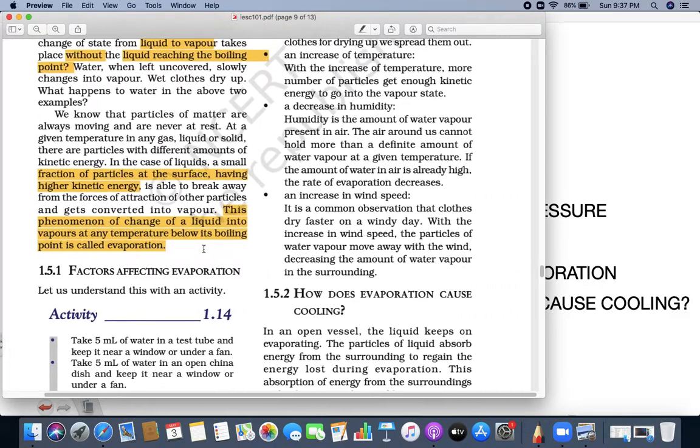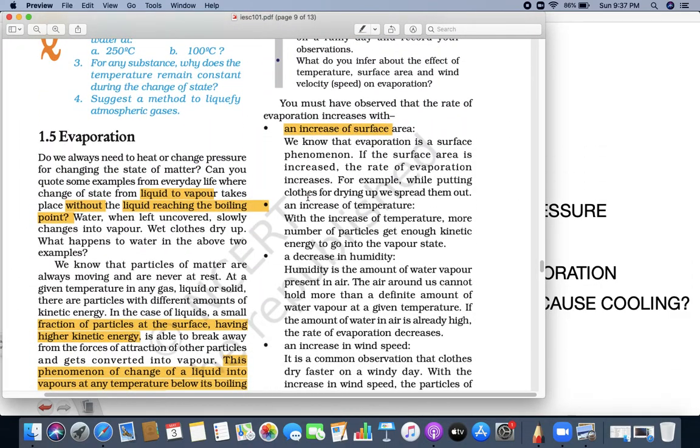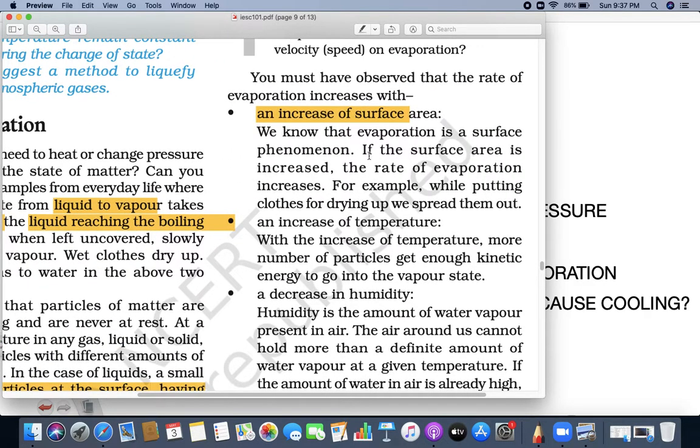I told you how does evaporation get affected. The evaporation can be affected by increasing the surface area. I told you when we wash our clothes, it gets wet. When you put it outside, you spread it, you increase the area of the clothes, so it gets dry easily. What if you clumped it together and put it like this? It will take a longer time. Surface area increases, the rate of evaporation also increases.